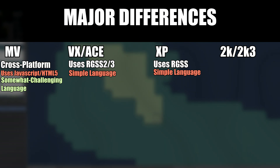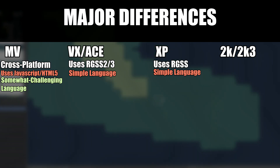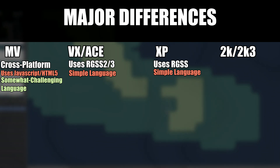The differences between RGSS and RGSS3, as far as I know, are minimal, so whichever version you get starting with RPG Maker XP, you should be pretty happy. If you're not into scripting at all, or the thought of scripting scares you, or maybe you just want some sort of limitations to challenge your creative skills, then I would go with RPG Maker 2003 or 2000.